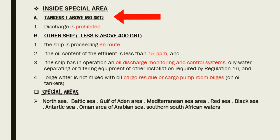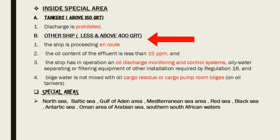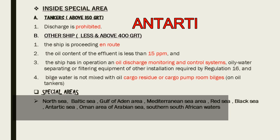Inside the special area: for tankers above 150 GRT, discharge is strictly prohibited. For other ships less than 400 GRT, discharge is prohibited except when: the ship is en route; the oil content of the fluid is less than 15 ppm; the ship has an operational oil discharge monitoring and control system; and bilge water is not mixed with oil cargo residue or cargo pump room bilges. Note: we can discharge bilges inside the special area only if conditions are satisfied. For other ships above 400 GRT, discharge is allowed except in the Antarctic area.